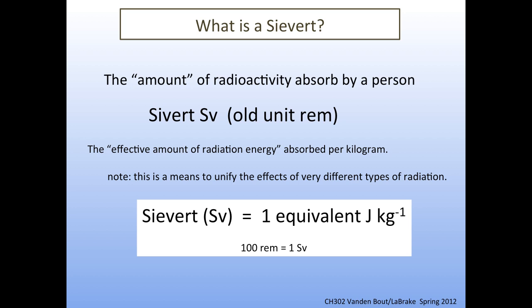Alpha, beta, and gamma radiation are all different, so what's been established is a scale in which we can come up with an equivalent energy for all these different forms of radiation. When you're trying to figure out your exposure, instead of saying you were exposed to this many joules of gamma radiation, this many joules of alpha, and this many joules of beta, we put it all into some equivalent energy per kilogram. This is because the amount of radiation you can be exposed to without damage depends on how big you are.